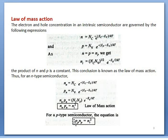In intrinsic semiconductor, the concentration of electrons is expressed by this equation, where Nc represents the effective density of states in the conduction band. Holes p is expressed by this equation, where Nv represents the effective density of states in the valence band. Ef is the Fermi level, Ev is the top of valence band, K is Boltzmann constant, T represents temperature, and Ec represents the bottom of conduction band.